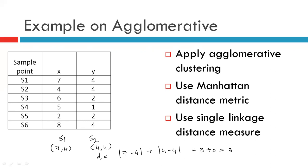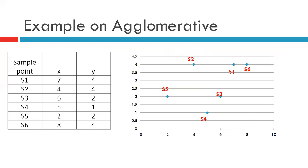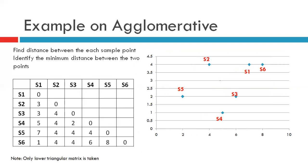Using these distances we will obtain the distance matrix. Before displaying the distance matrix, let us visualize how these points look. In two-dimensional space, points s1 to s6 are scattered as shown. Intuitively, looking at this graph, you will realize that the first cluster to be formed will be s1 and s6, because we are using minimum distance measure and the distance between s1 and s6 looks to be minimum. This is our distance matrix — we have used only the lower triangular matrix, and these are the Manhattan distances amongst each pair of sample points.